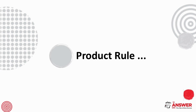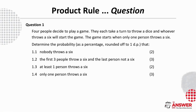On to questions on the product rule now. Question 1 is about 4 people taking turns to throw a dice to see who starts a game. Pause the video to take a moment to read through the question and then give it a go.